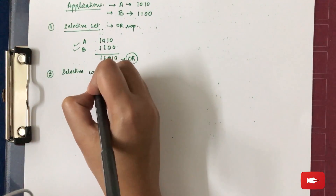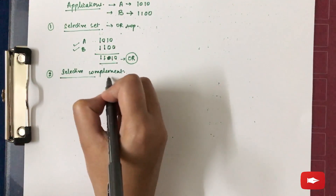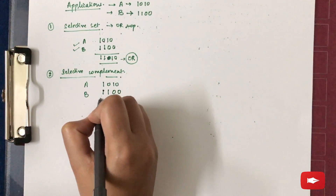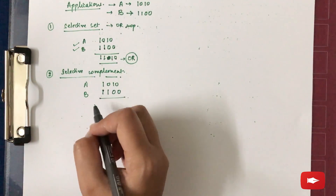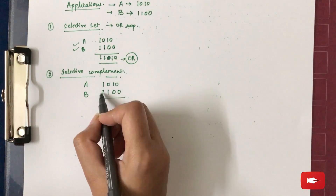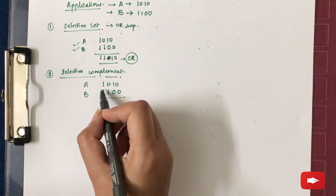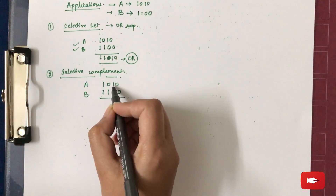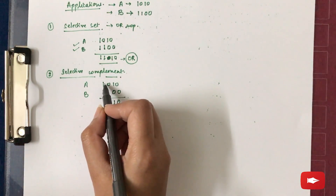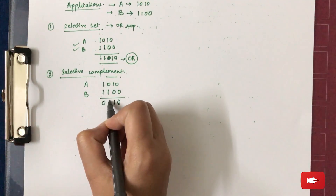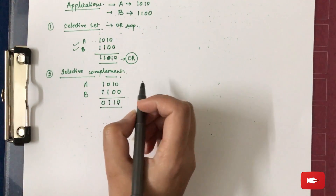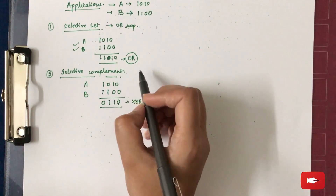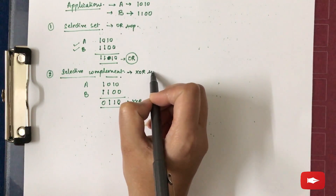The second application is selective complement. Taking the same two registers A and B with values 1010 and 1100 respectively, wherever the value of bits in B is 1, the corresponding bits in A will be complemented; otherwise, they remain unchanged. Where B is 00, A stays the same; where B is 1, the bit is complemented, so 1 becomes 0 and 0 becomes 1. The result is similar to the XOR operation on A and B. Therefore, selective complement is equivalent to the XOR micro-operation.